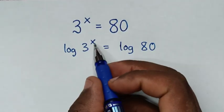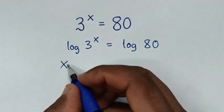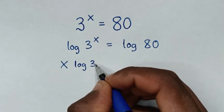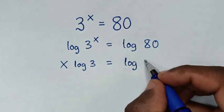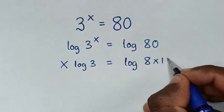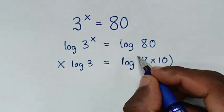Then this power of x will move to the base, so it will be x log of 3 is equal to log of 80, same as 8 times 10. Then here we can place bracket.